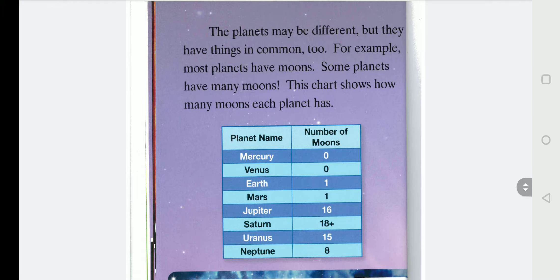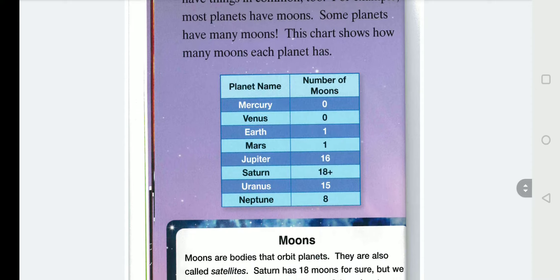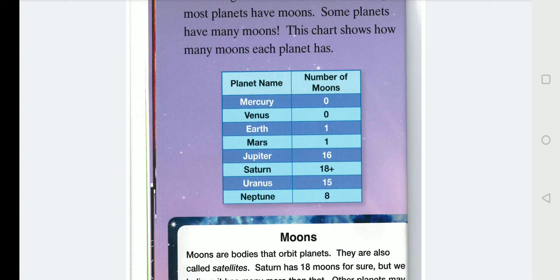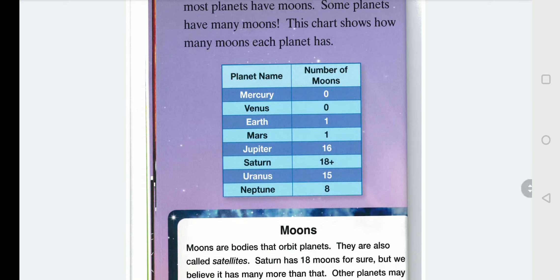The planets may be different, but they have things in common too. For example, most planets have moons. Some planets have many moons. This chart shows how many moons each planet has. We have the planet name and we have the number of moons. Can you see which one has the most amount of moons?